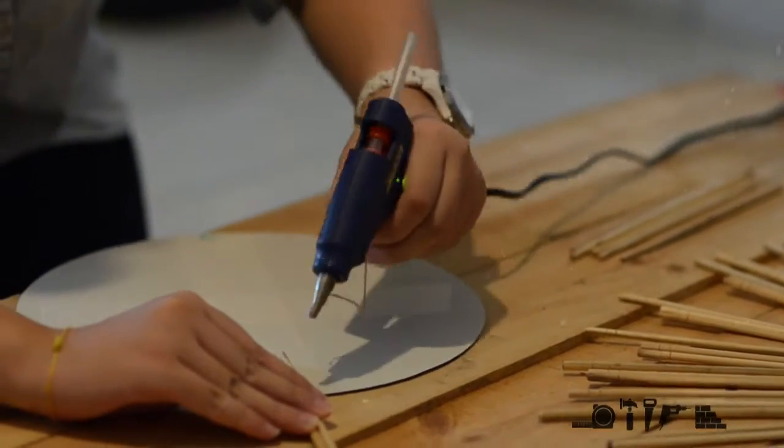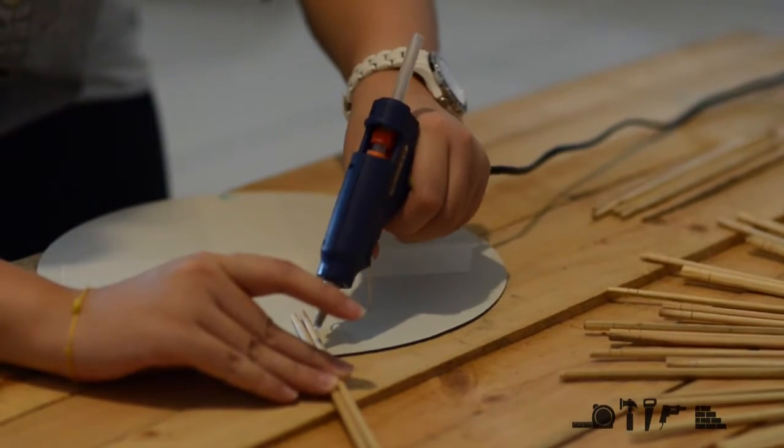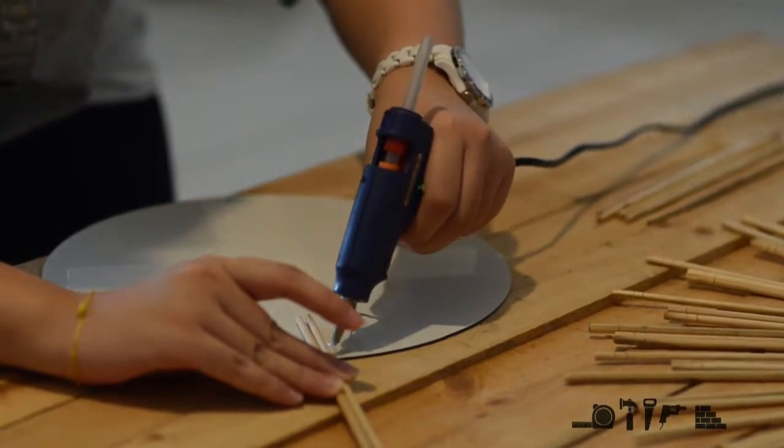Then glue the chopsticks in place according to the guideline to create a radiating circle around the circumference of the mirror.